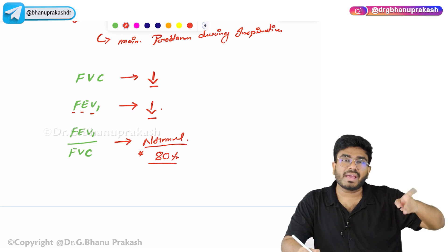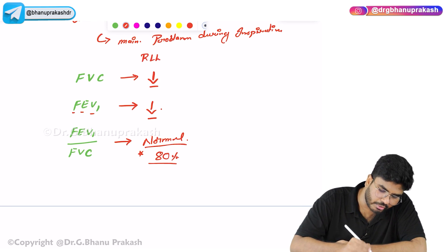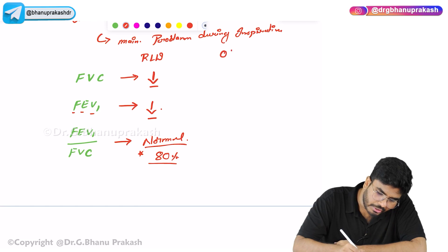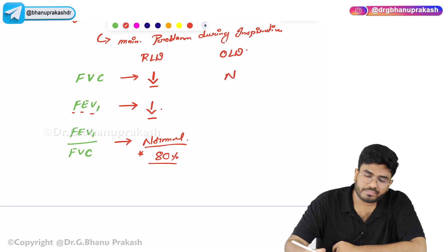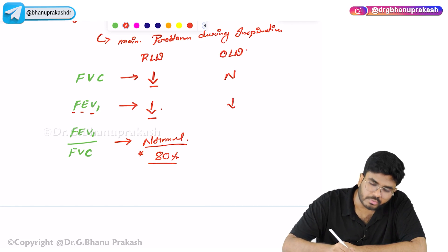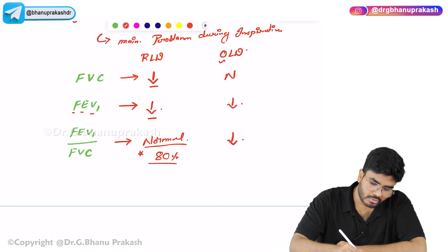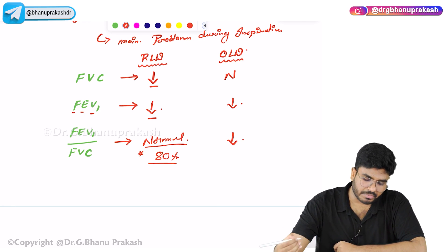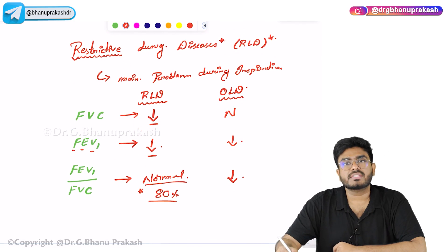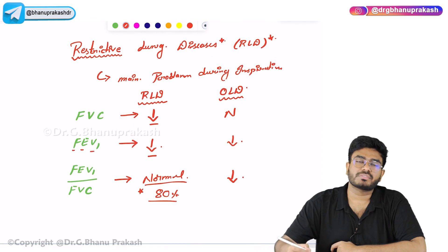In contrast with obstructive lung diseases: in obstructive lung disease, the forced vital capacity is going to be normal, FEV1 is going to be reduced, so the FEV1/FVC ratio is going to be reduced. Based on this, we can differentiate between obstructive and restrictive lung disease. In obstructive lung disease the main problem is with expiration; in restrictive lung diseases the main problem is with inspiration.